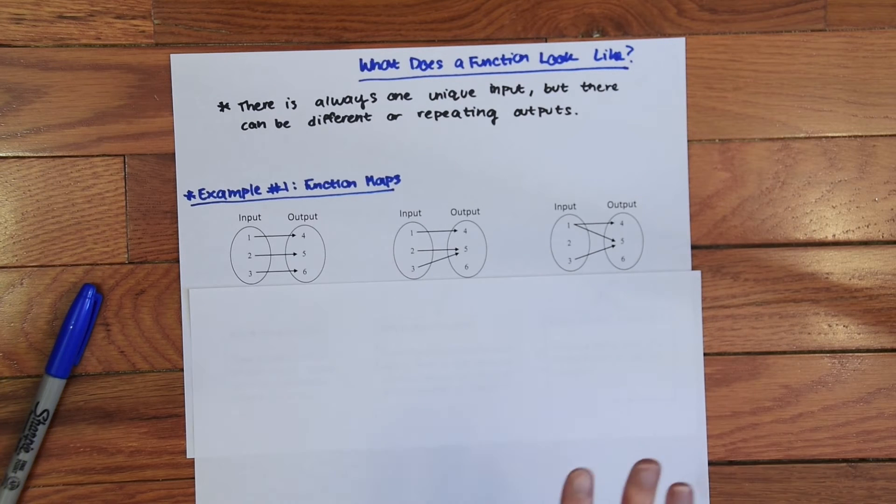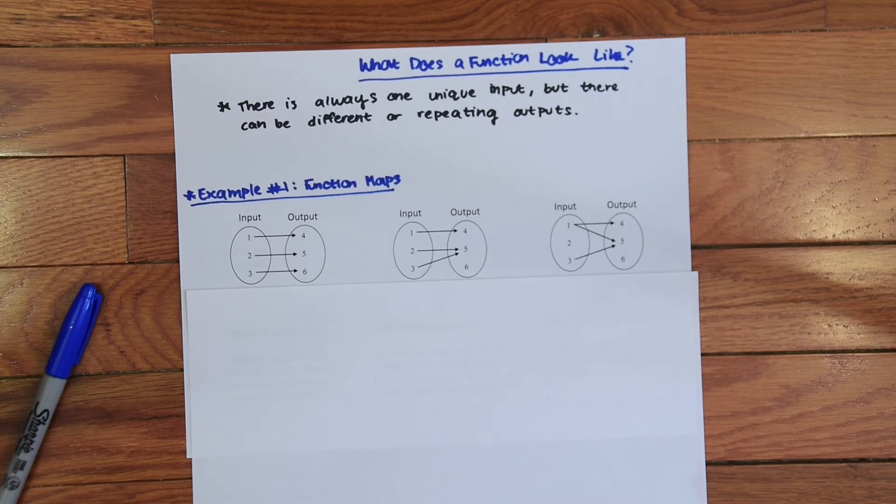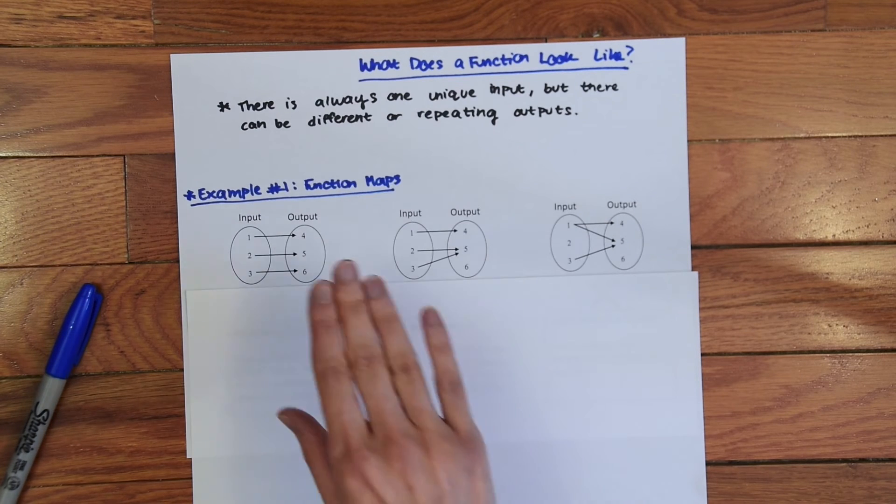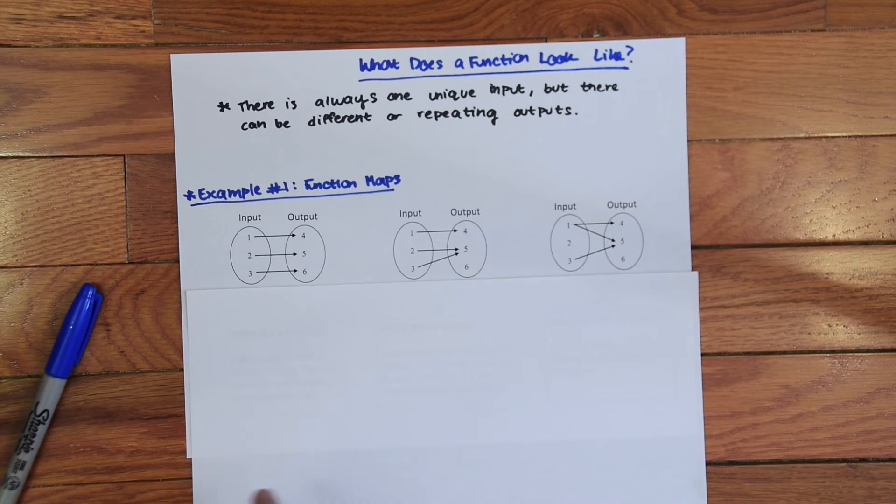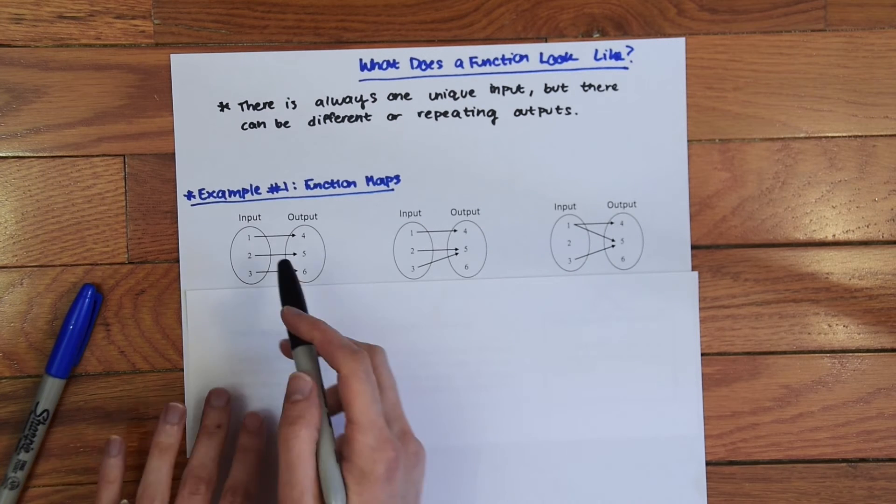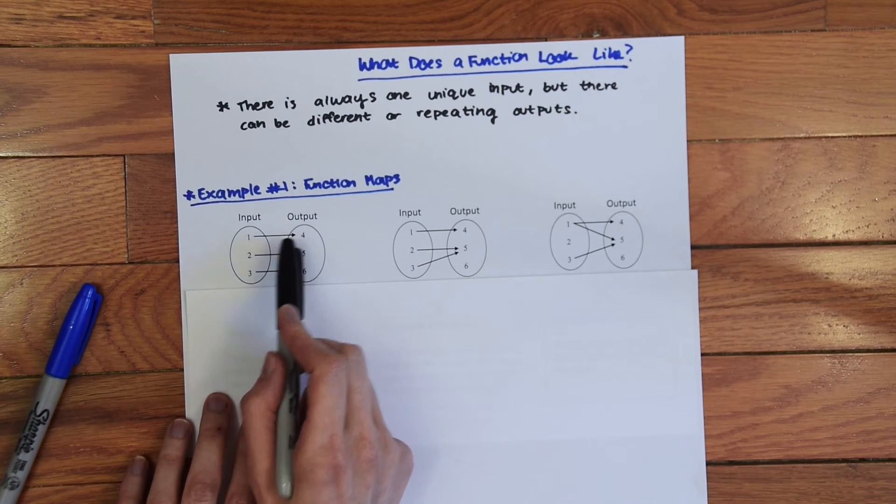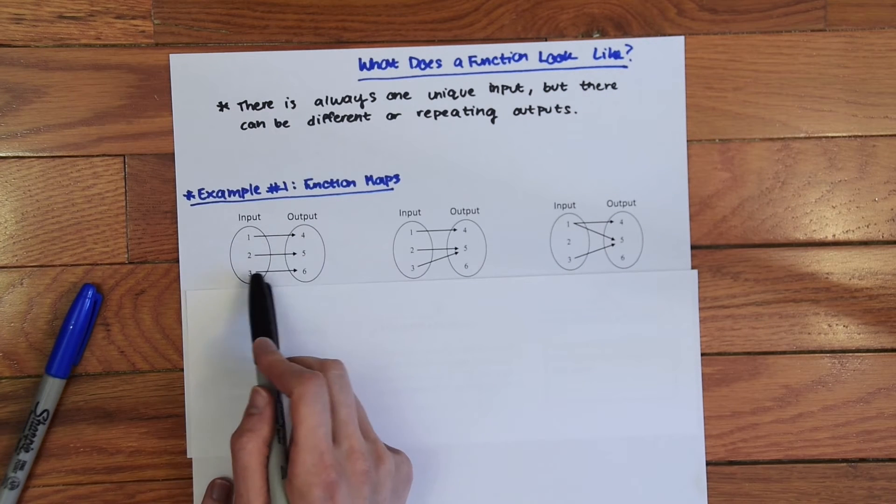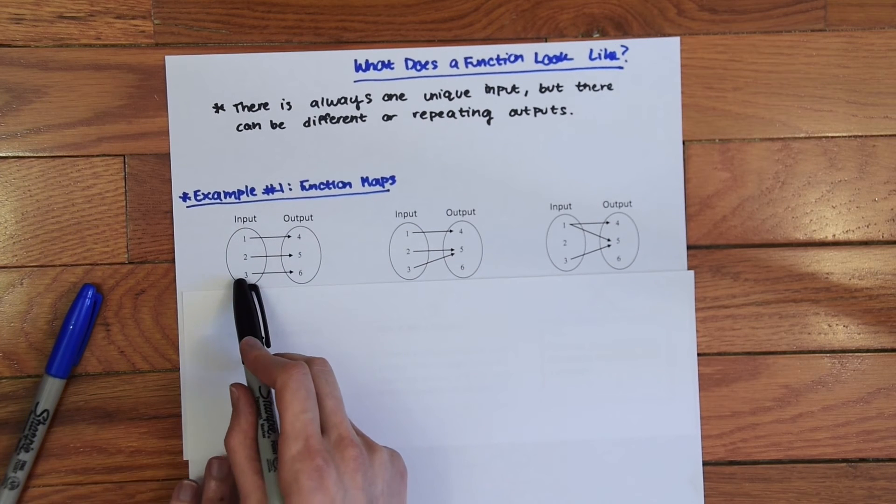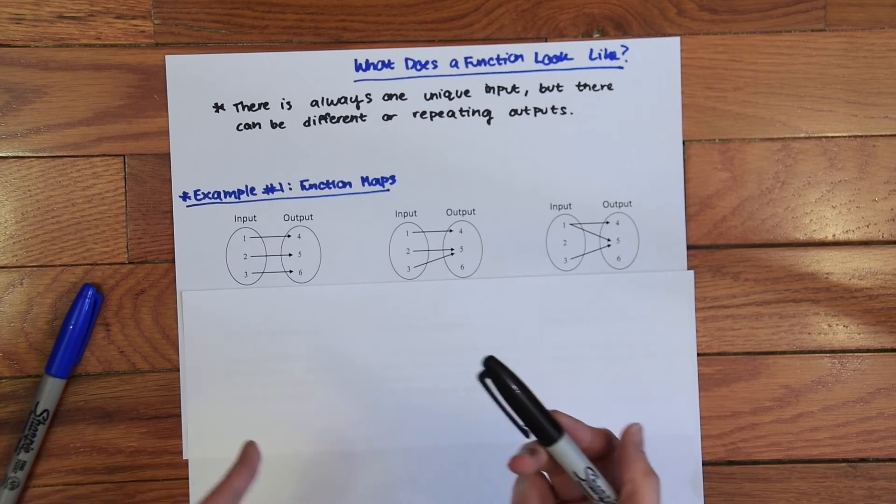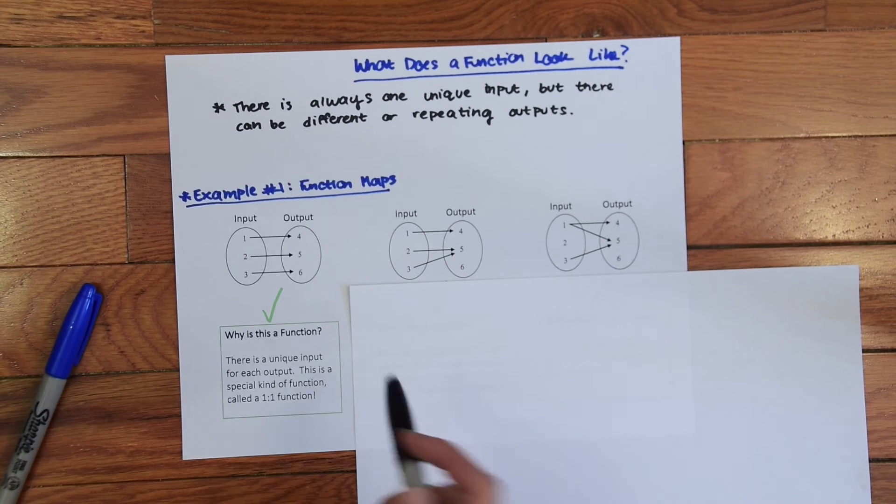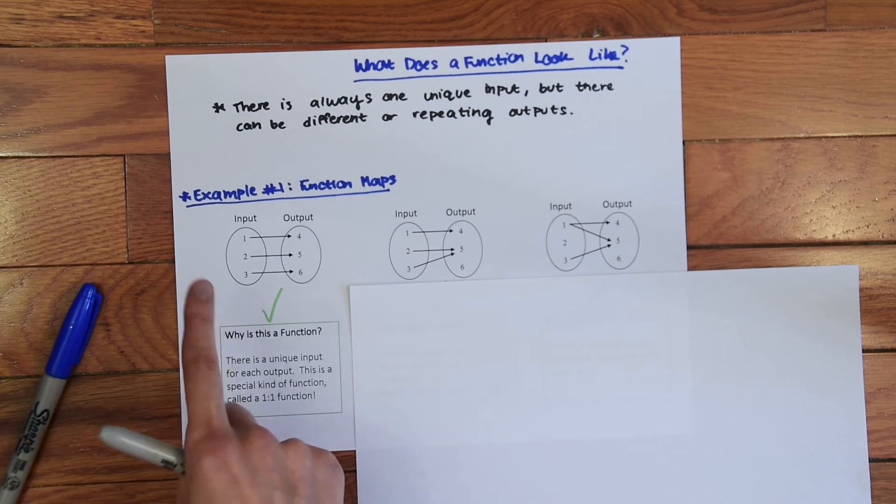So here's a bunch of different potential functions, maybe they're functions maybe they're not, but the way they look these are called function maps. So if we just focus on this first example here, notice that we have one input for every output. One is paired with four, two is paired with five, and three is paired with six. So since there's one input for every output we know that this is a function, yes. And actually this is a special type of function called a one-to-one function since there's a unique output for every input.